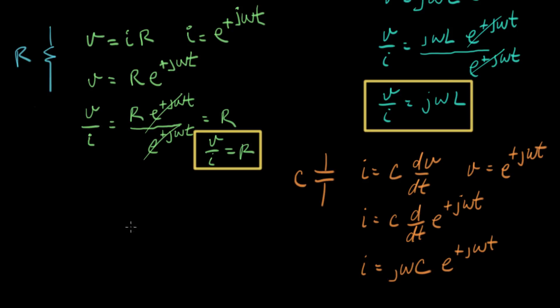And now we'll ask the same question again that we did before, which is what is V over I for a capacitor? And we can fill this in. V is e to the plus j omega t, and the current is j omega C times e to the plus j omega t. And once again, we get this nice cancellation. This cancels with this.